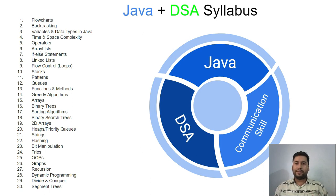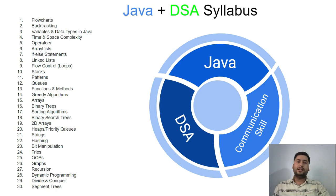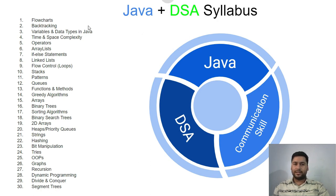The syllabus covers: flowchart, backtracking, variables, data types, time and space complexity, operators, arrays, lists, if-else conditions, linked lists, flow control, and stacks. Whatever syllabus you are able to see, I will explain definitely. Apart from this, whatever advanced concepts we have — trees, graphs, maps, tries — everything I will explain in this course.